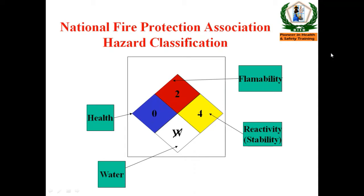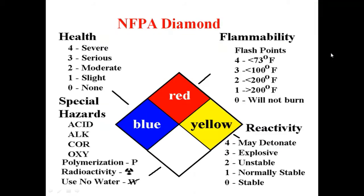The blue section of the NFPA diamond indicates health hazard. When you look at a drum or container, you will see the colors red, yellow, and blue, each with a number inside.